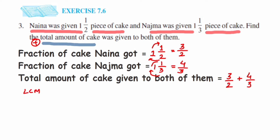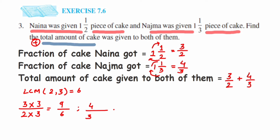To solve this, we need to make them like fractions by finding the LCM of the denominators two and three. The LCM of two and three is six. For three upon two, we multiply numerator and denominator by three to get nine upon six. For four upon three, we multiply numerator and denominator by two to get eight upon six.